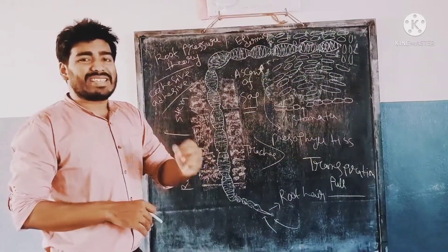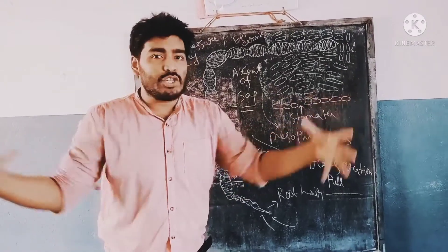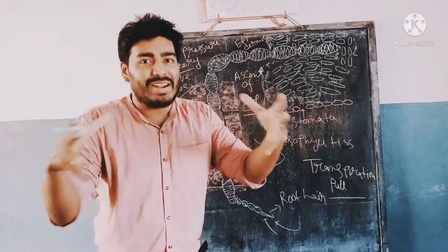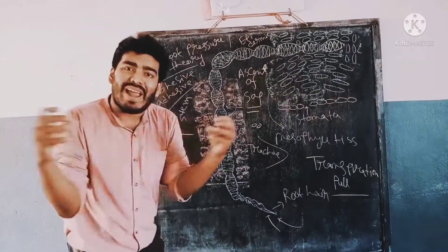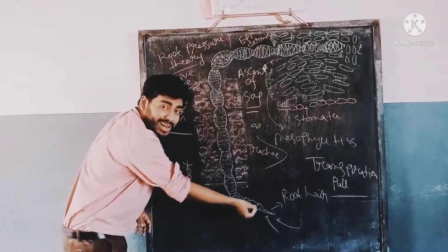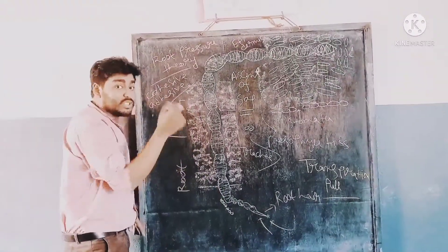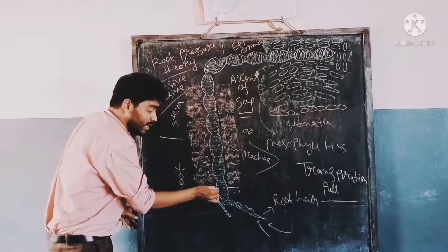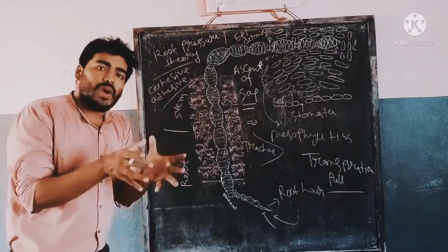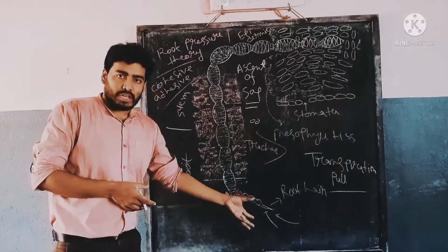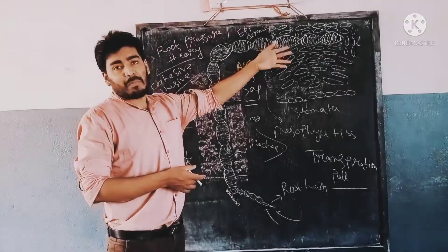The next theory is the cohesive-adhesive force theory, proposed by scientists Dixon and Joly. Cohesive force is when two water molecules attract each other. When water comes into the trees, the water molecules attract each other and create a transpiration pull — this is cohesive force. When the water molecule is attracted by the xylem vessel of the plant, this force is called adhesive force. By cohesive and adhesive forces, water comes in from the soil through the root and root cortex, then is transported by xylem vessels to reach the apical portion of the leaves.